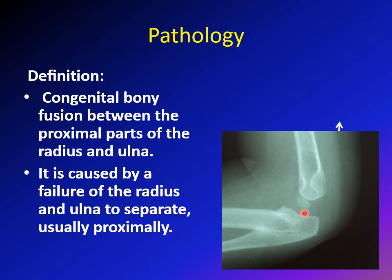Embryologically, all three bones — the humerus, radius, and ulna — start as one bone. Normal development involves their separation into individual bones. In radio-ulnar synostosis, there is a failure of separation of the proximal part of the radius and ulna, so instead of separating into two distinct bones, they remain fused together in that region.